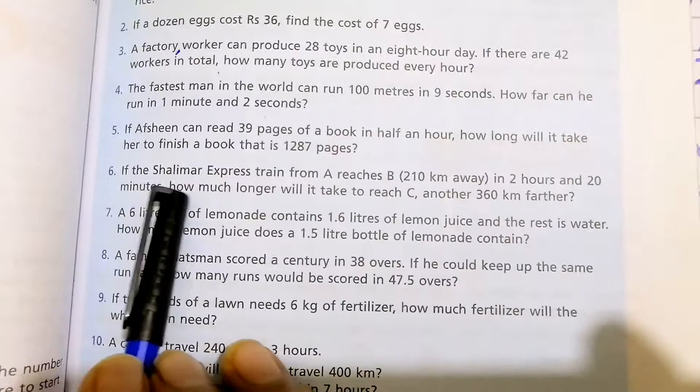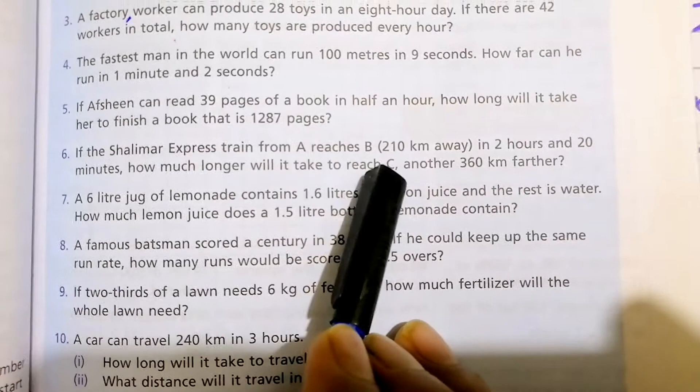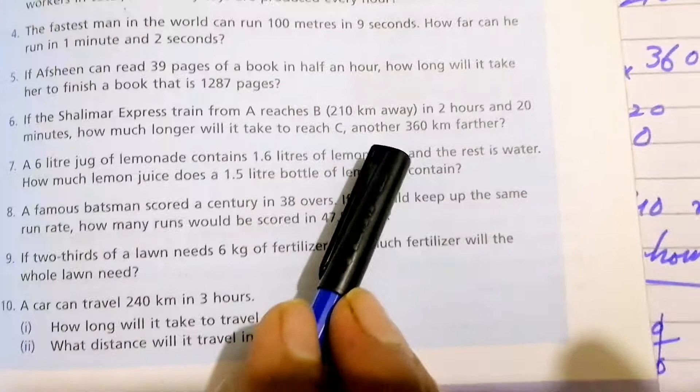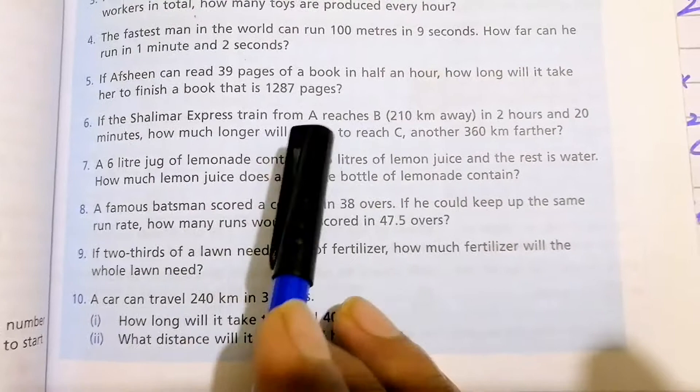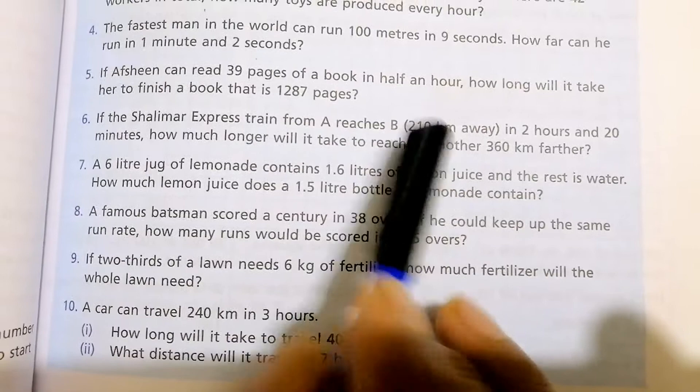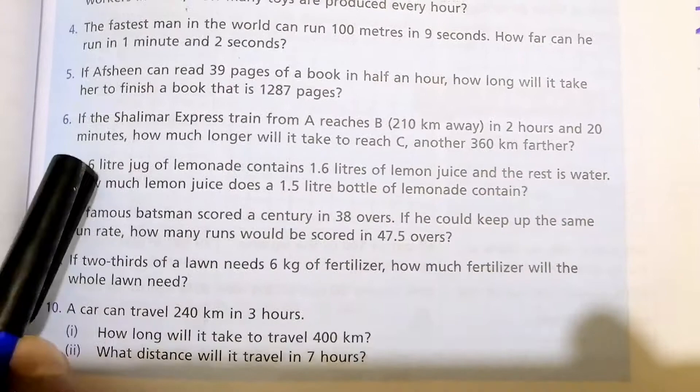If the Shalimar express train from A reaches B, 210 kilometers away, in 2 hours and 20 minutes, how much longer will it take to reach C, another 360 kilometers? There are distances given. The train will travel between A and B stations. The distance is also given. It will cover 210 kilometers in 2 hours and 20 minutes. How much longer will it take to reach C?